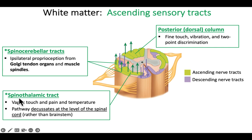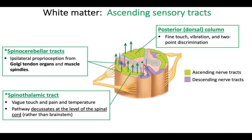Spinothalamic is another tract. Spino means it's coming up the spinal cord, and thalamic refers to the thalamus — where a lot of your sensory information goes first before being relayed to other parts of the brain. The senses that have to go to the thalamus include touch, vague touch, pain, and temperature. The only way to get to the thalamus is to get into a spinothalamic tract.